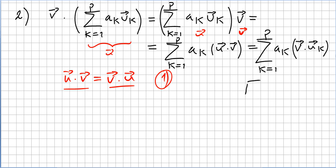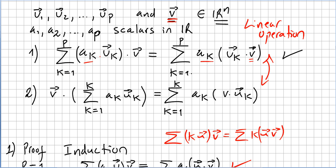And this concludes the proof. So we just proved that v dotted with the sum of ak·uk is equal to the sum of ak times (v · uk). With a fixed vector v, the dot product is a linear operator — or equivalently, taking the dot product with a fixed vector v represents a linear operation.